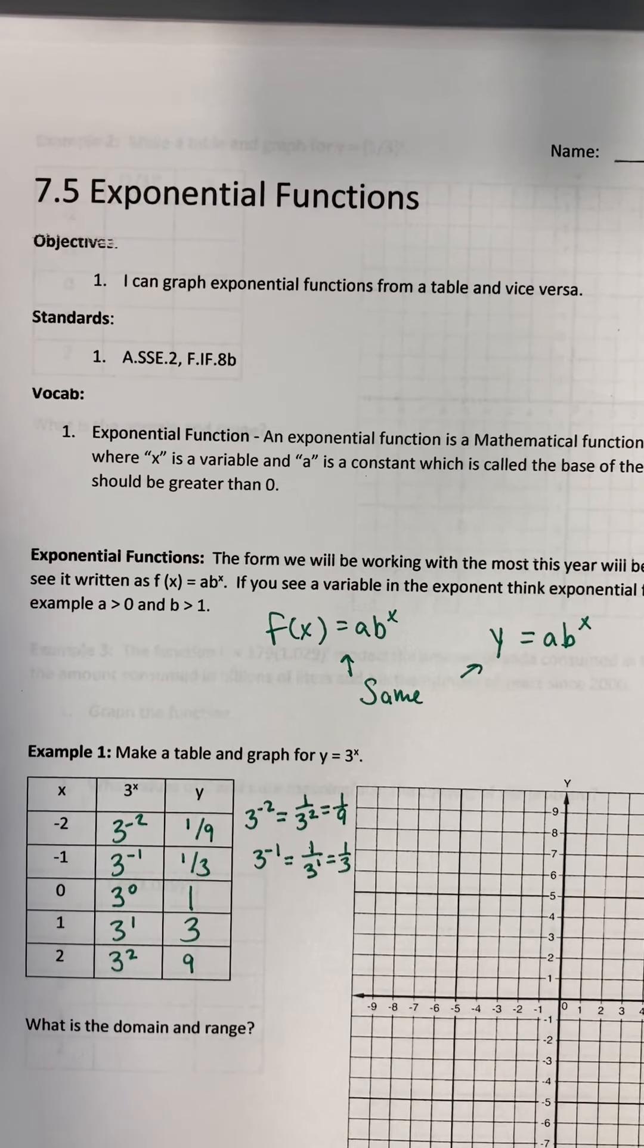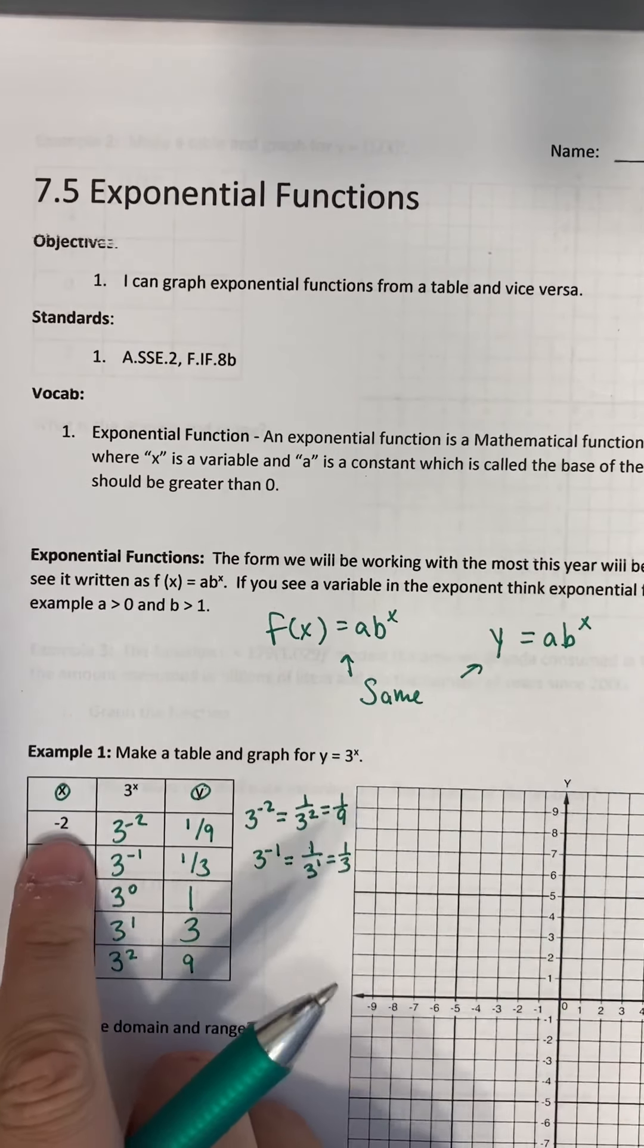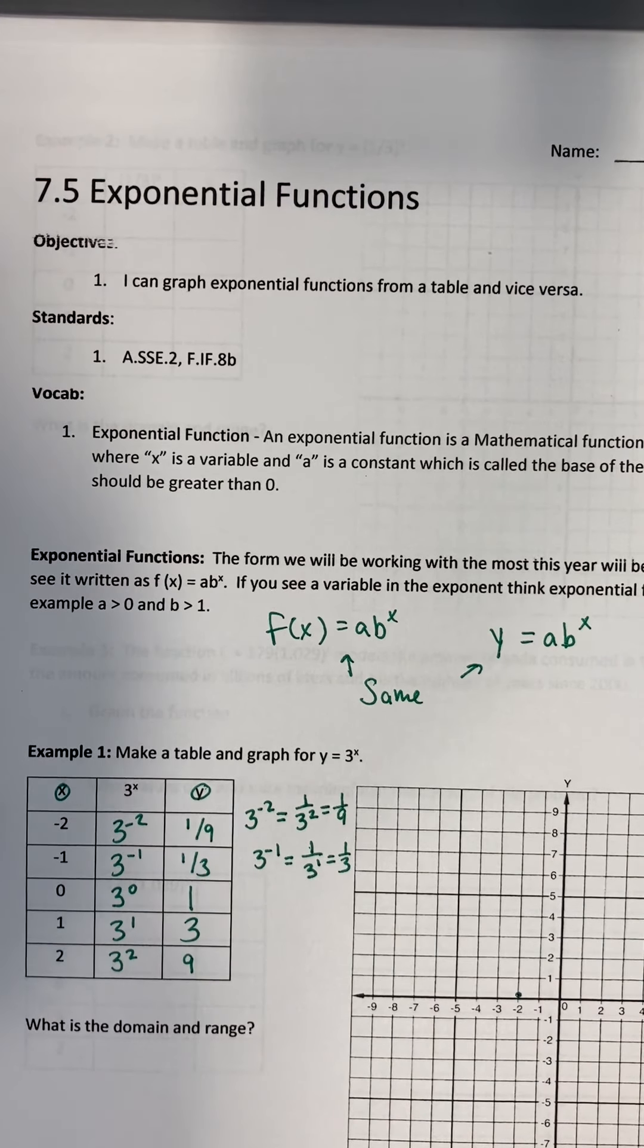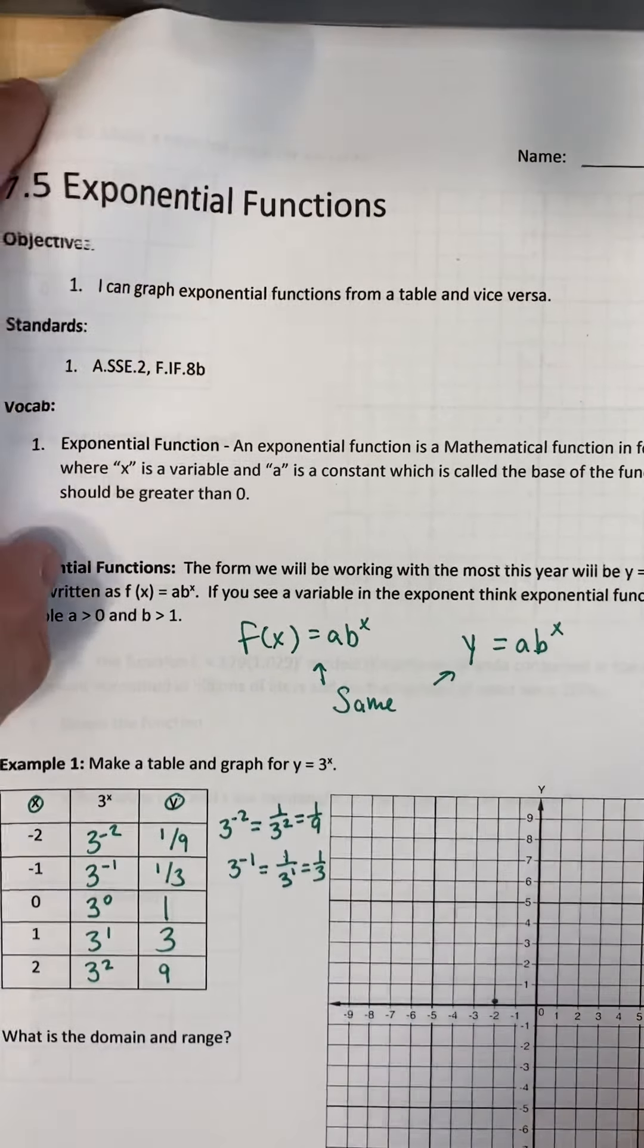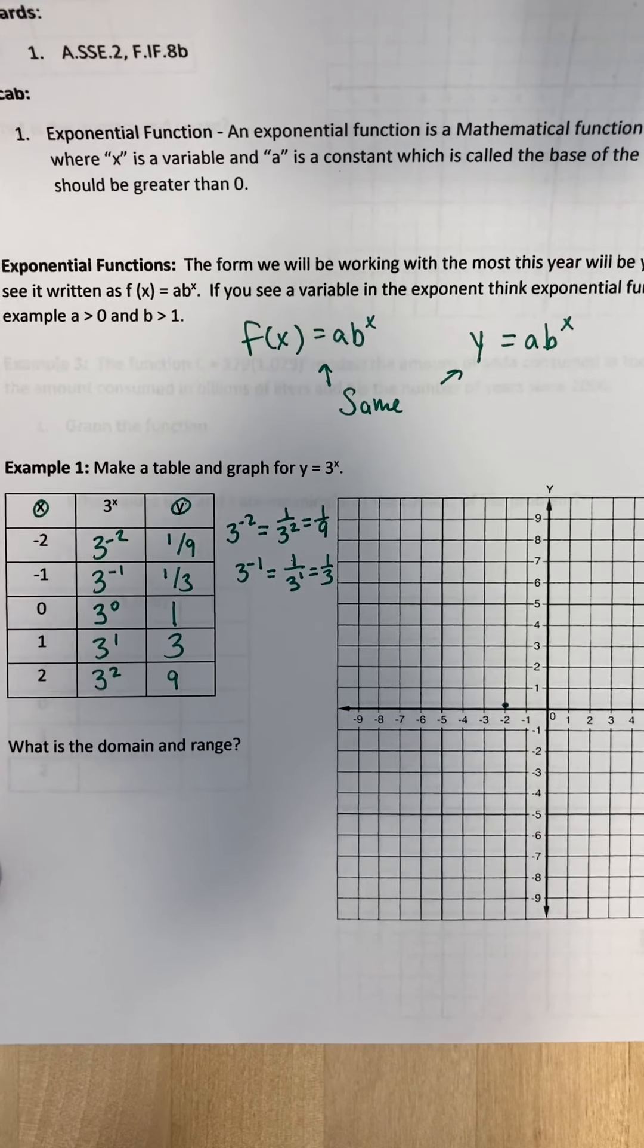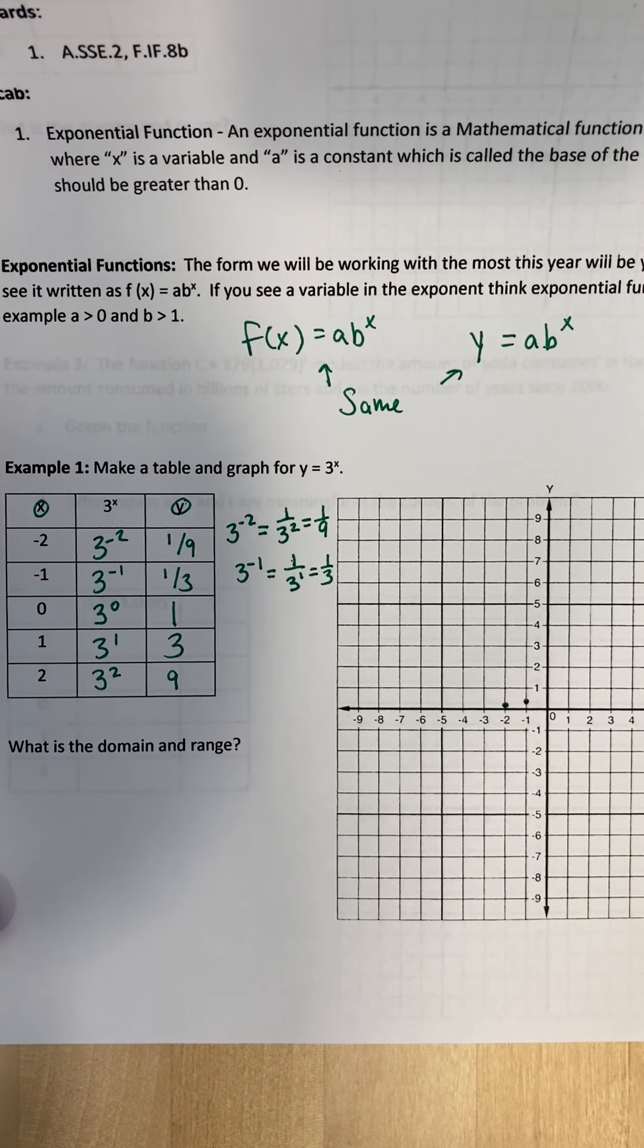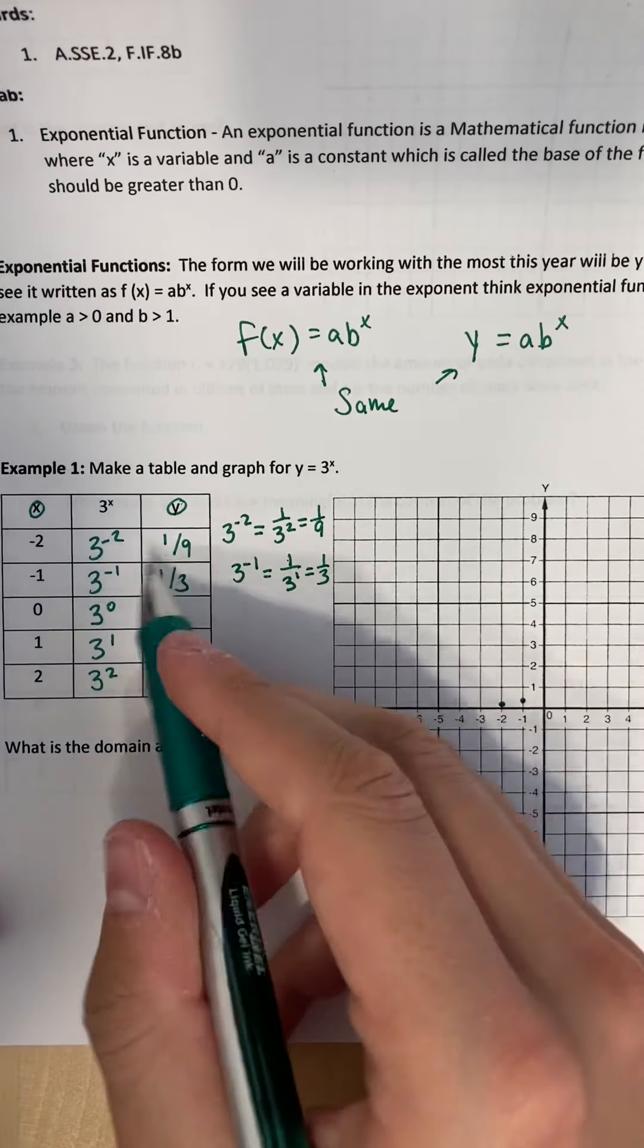Now we have everything we need to graph it. These are going to be your x's and these are going to be your y's. So negative two is going to be here, and I'm going to go up to one ninth, which is going to be way down here. Now negative one and one third, when I go to negative one, I'm going to come up here to one third, I'll put a dot right there. Zero, zero, and then I'm going to go up to one.